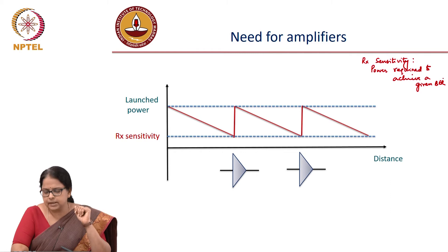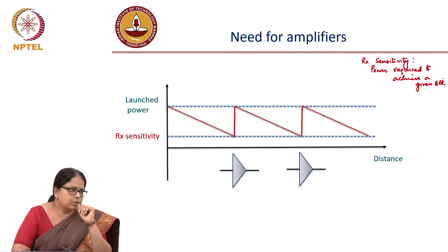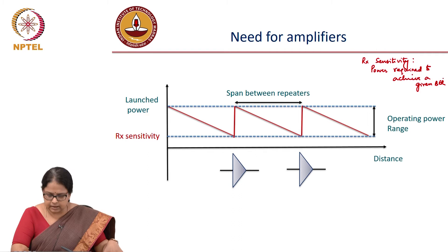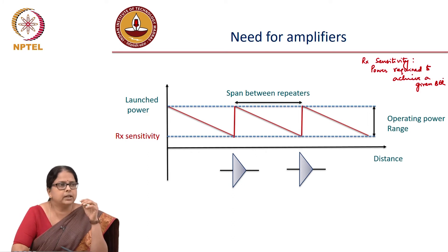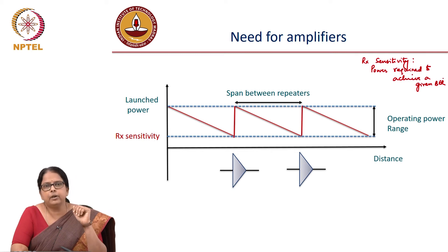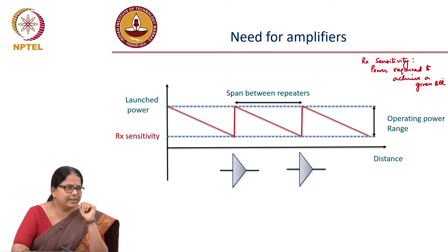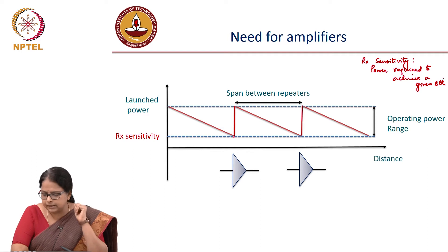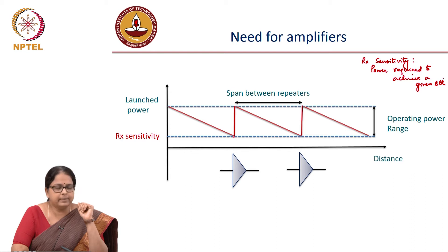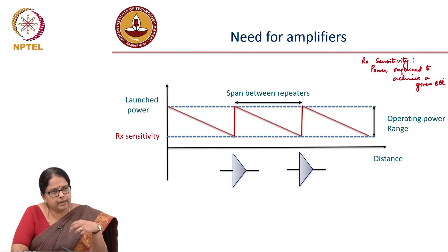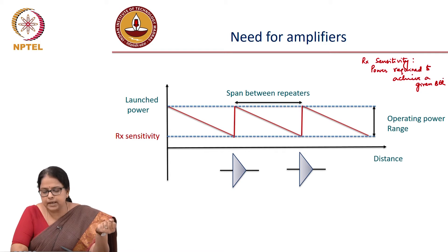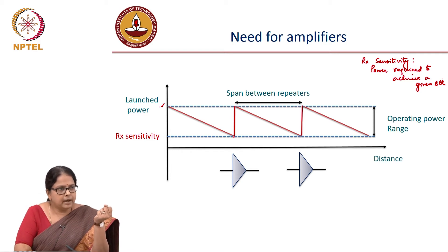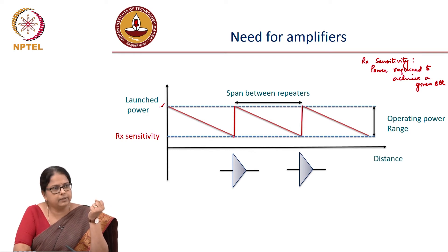The question is what kind of amplifier should this be? The easiest solution is to use an electronic amplifier, since that is something everybody is very familiar with. The distance between two consecutive amplifiers is called the span — the fiber span between repeaters. It is called a repeater because the signal is being received, amplified ideally to the same quality as what was transmitted, and the process is repeated after a certain fiber length.